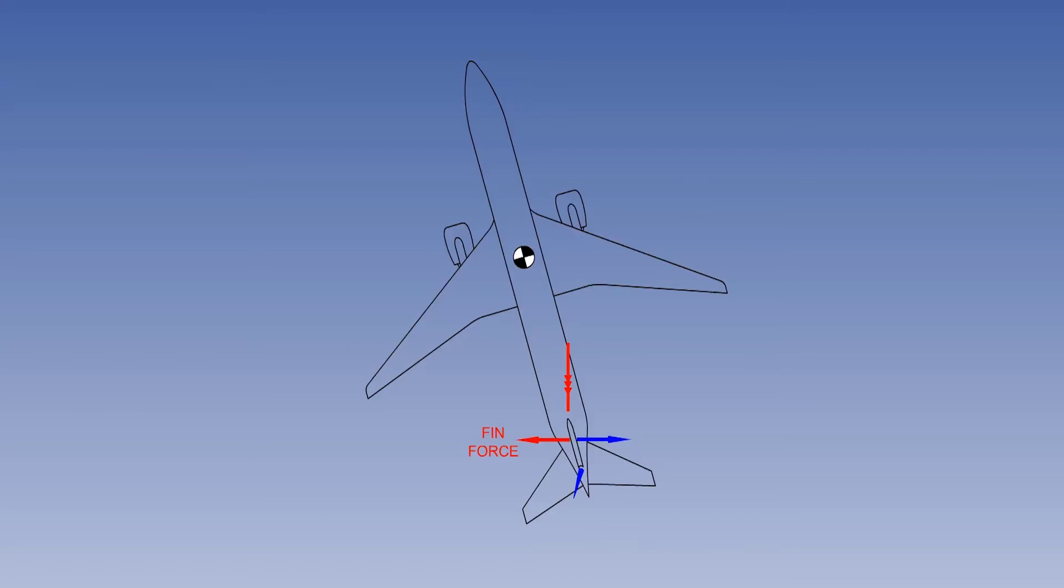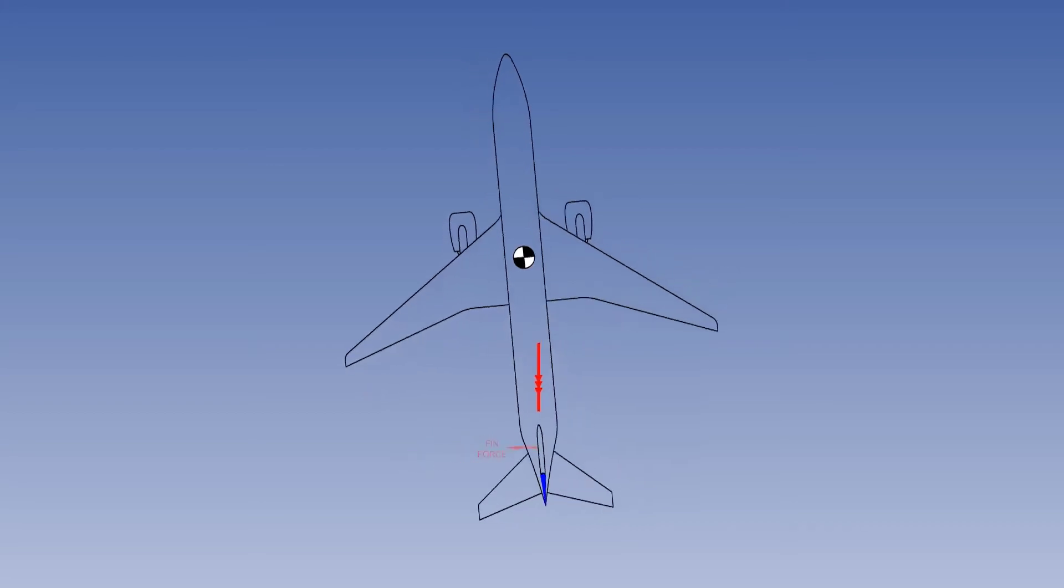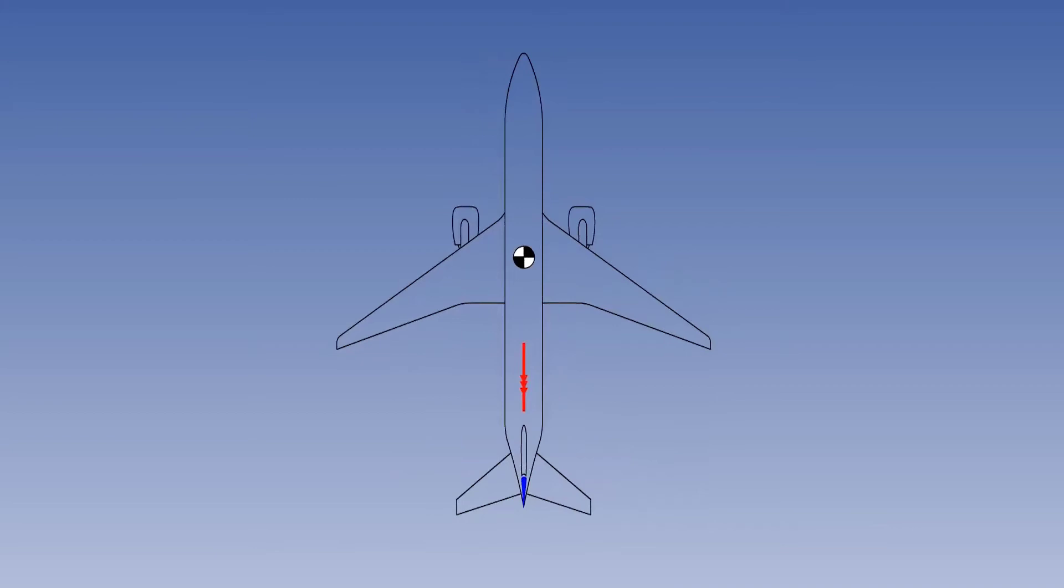When the rudder is returned to neutral, the rudder force is removed. The fin force will yaw the aircraft to the right, until once again it is in straight, steady flight.